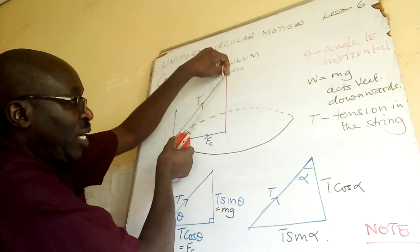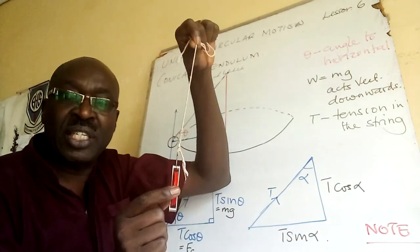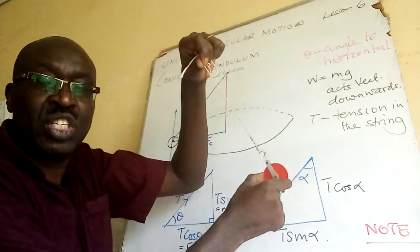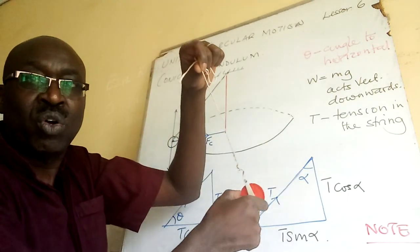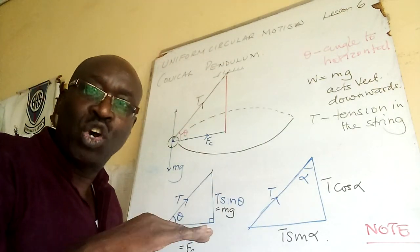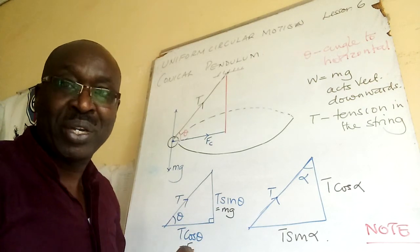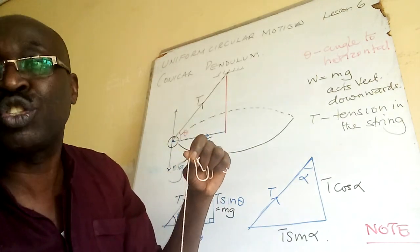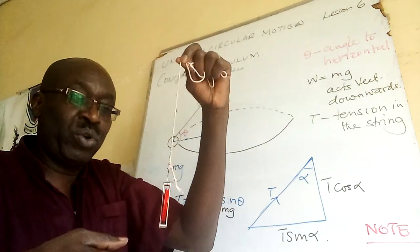Then it moves, so it is prescribing a horizontal circle. So we are considering that circular motion on a horizontal plane. The thread makes an angle with the horizontal.